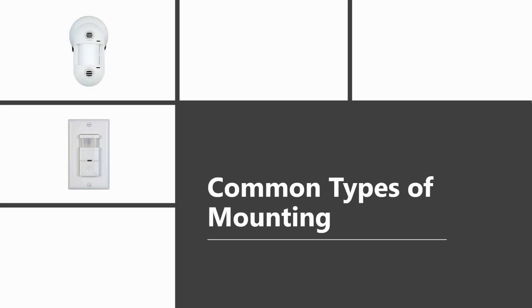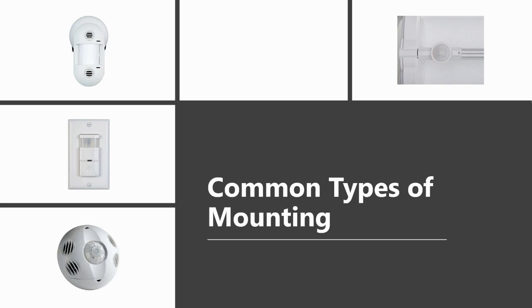High wall and corner mount sensors provide a good line of sight for larger areas like warehouses and gymnasiums. Fixture mounted sensors come as a package with the luminaire, making retrofitting easier because the sensor is already part of the light. Ceiling mounted sensors provide good coverage and a good line of sight. Lastly, portable sensors are used for smart power strips and are also great for vending machines and office cubicles.